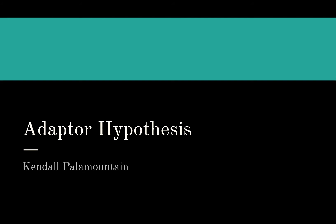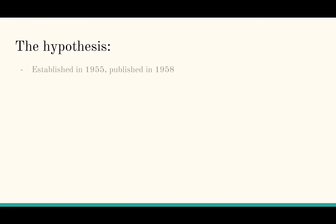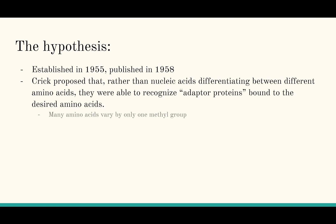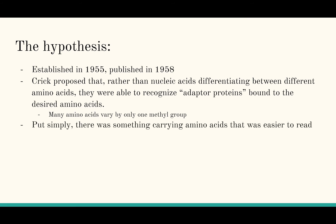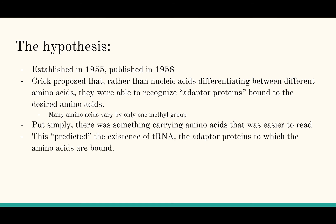Today I will be discussing the adapter protein hypothesis. The idea of an adapter protein was presented by Francis Crick. Following its discovery, the concept circulated privately in 1955 and was finally published by Crick in 1958. Crick postulated that rather than nucleic acids — the makeup of DNA and RNA — distinguishing between different amino acids, which often only differ by one methyl group, they were able to be recognized by a larger unit which he called an adapter protein.